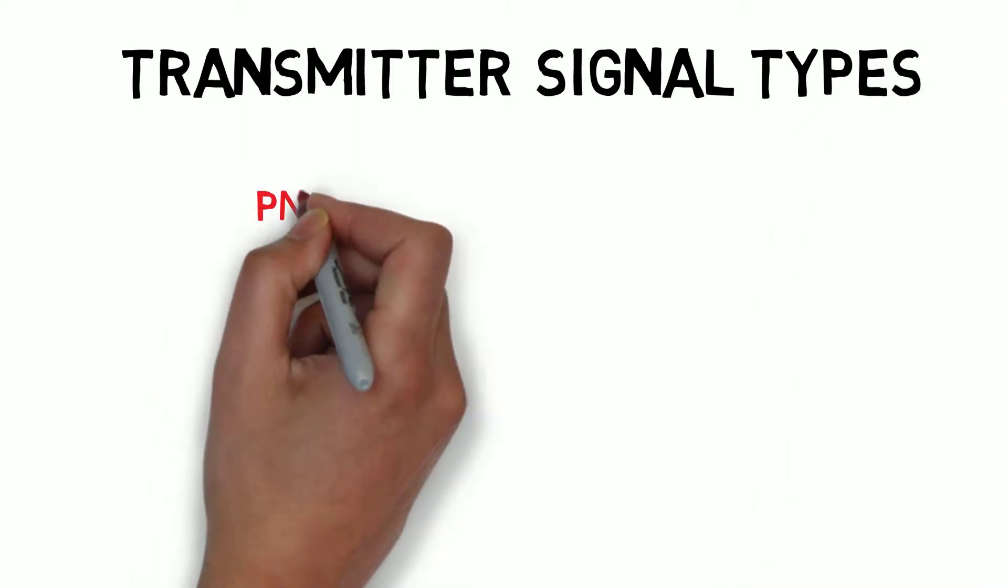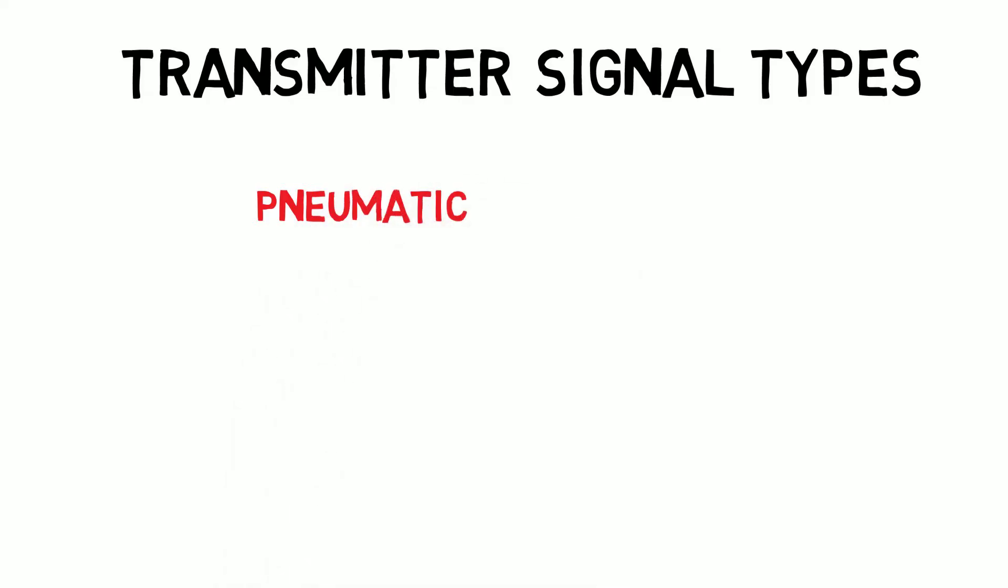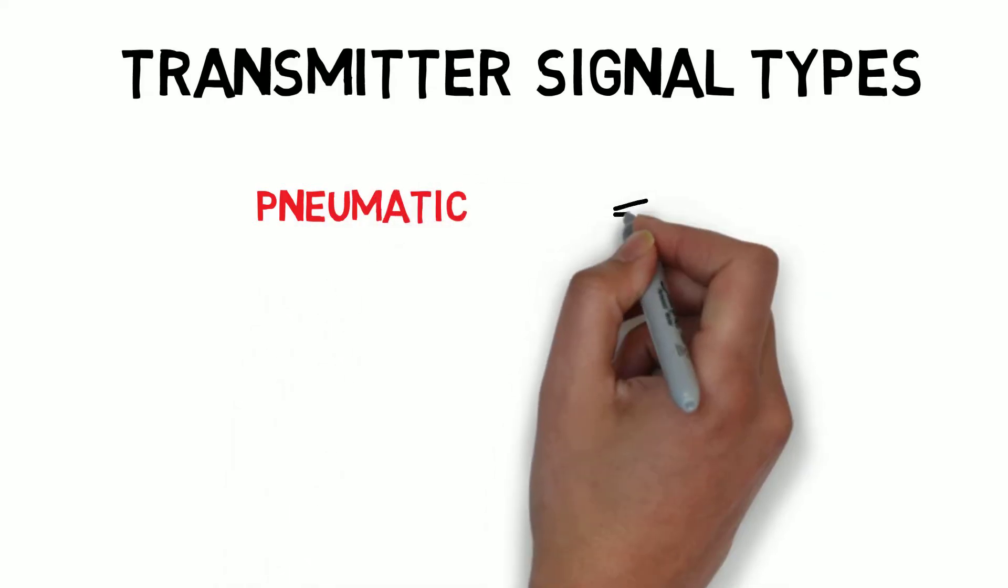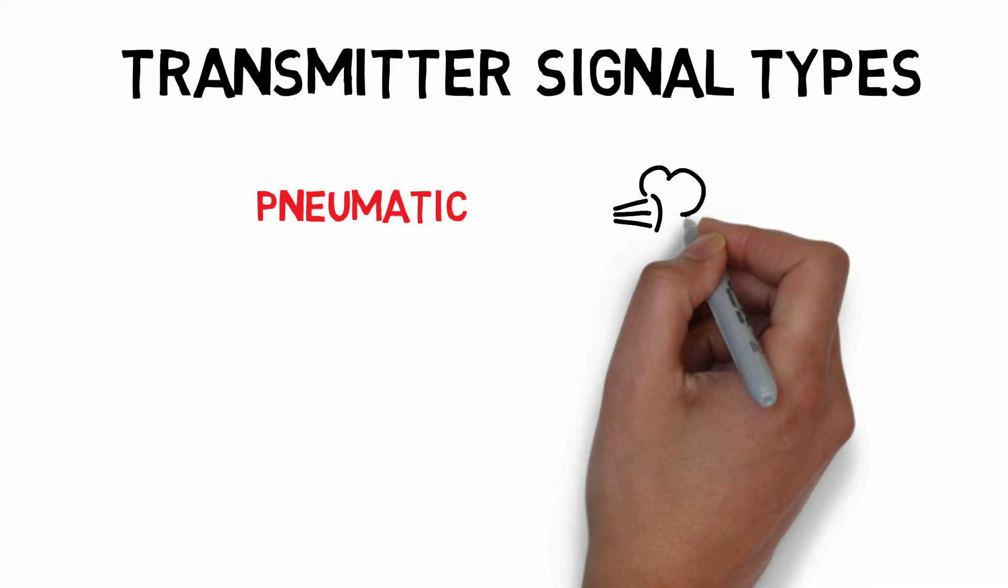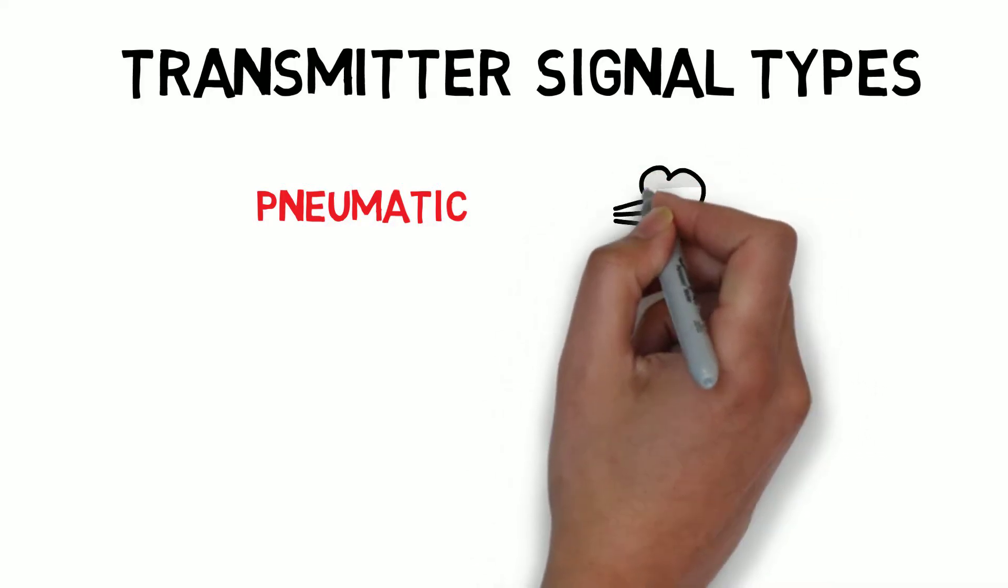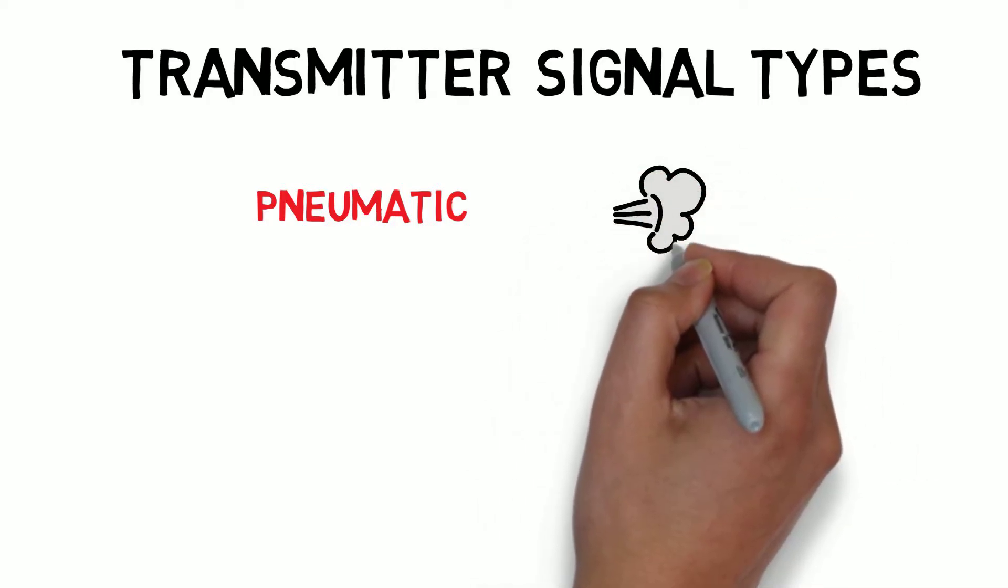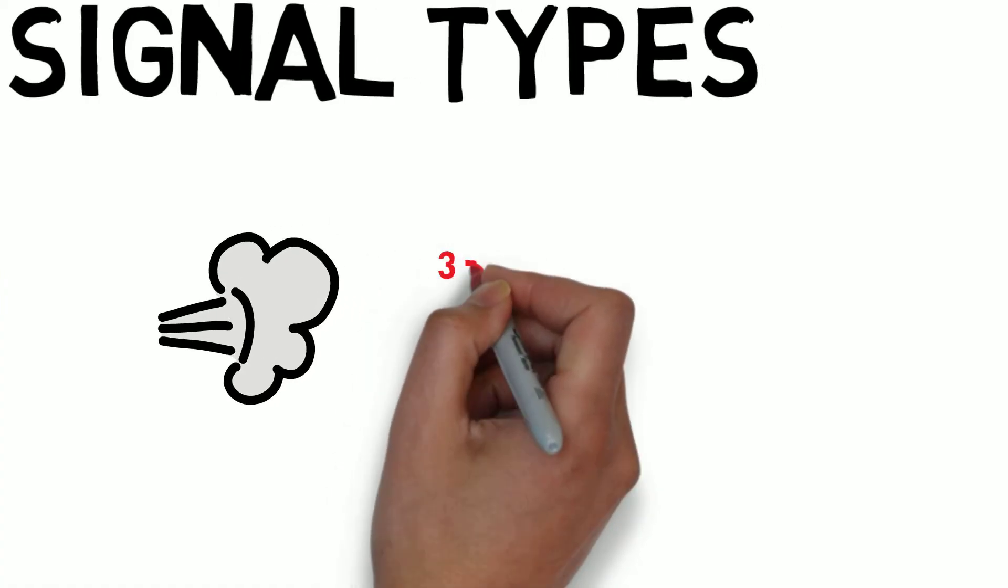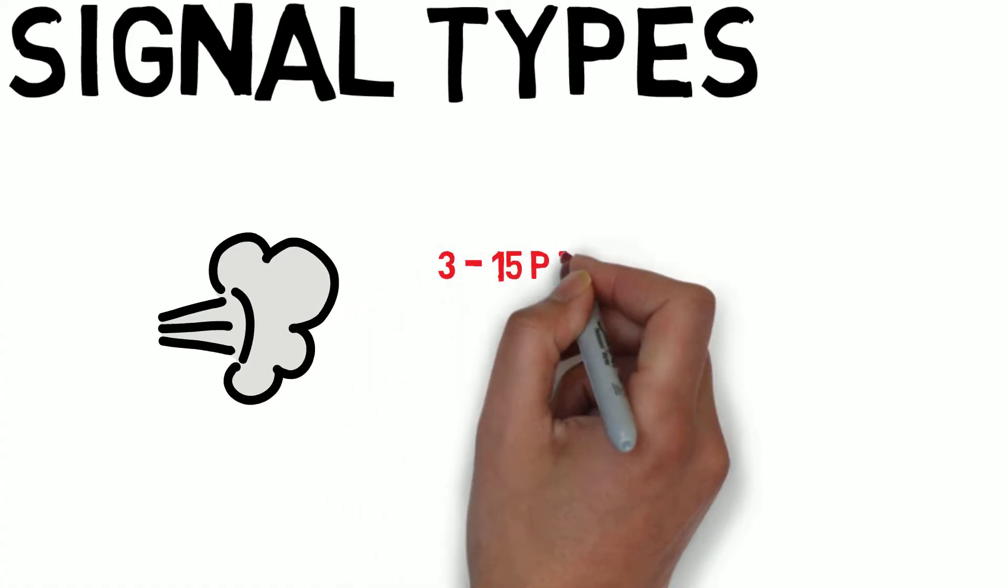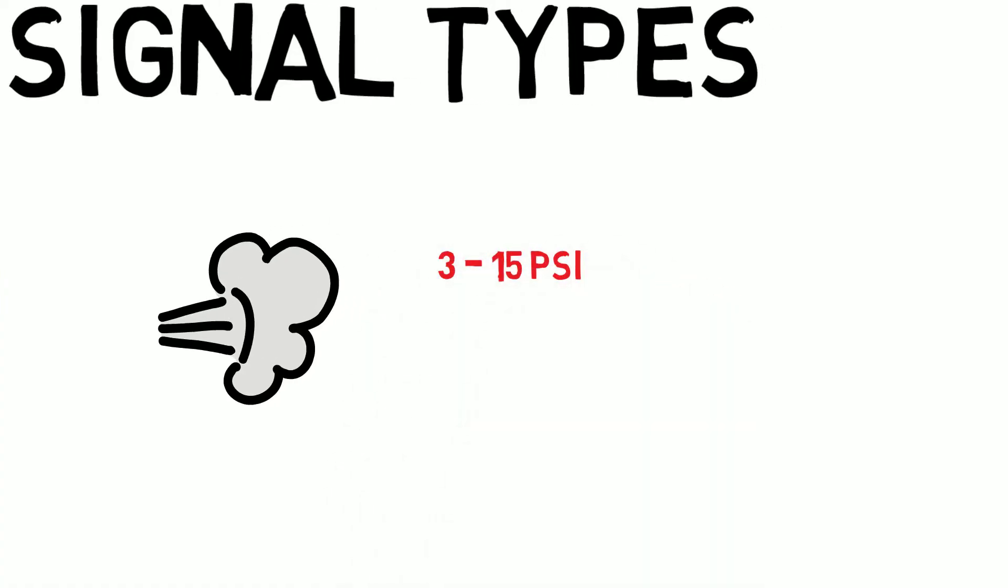Let's talk about some of the common signal types that transmitters convert their detected process variables into. There are broadly three categories of signal types seen in industry. Pneumatic. These transmitters are powered by pressurized air. They work to regulate the pressure of their output and usually give a signal of 3 to 15 psi or 0.2 to 1 bar.